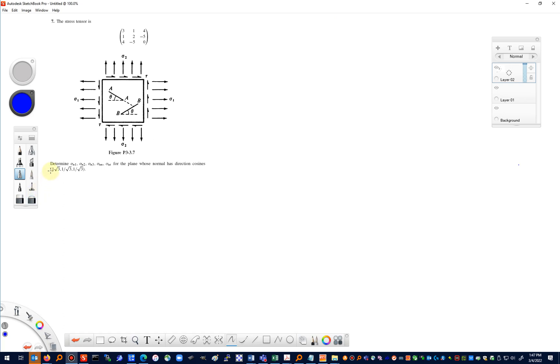In the third edition of the problem there is an error. There should be a slash right here so that the unit normal or the direction cosines should really be 1 over the square root of 3, 1 over the square root of 3, 1 over the square root of 3. The interpretation as direction cosines means the sum of the squares need to equal 1, which corresponds to a unit normal that has these components.